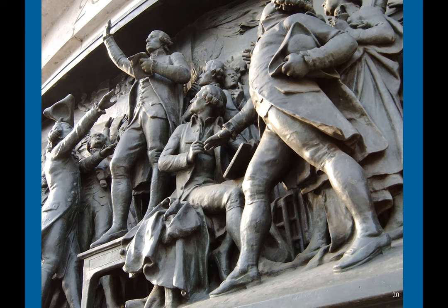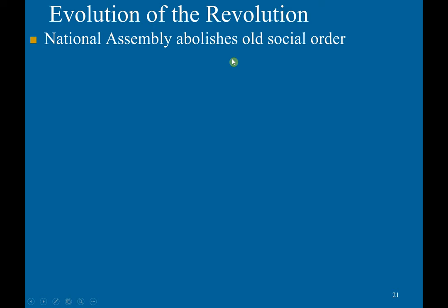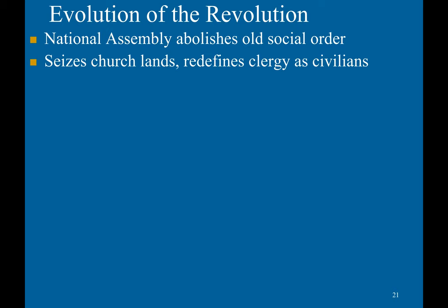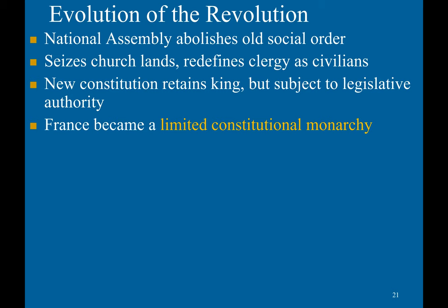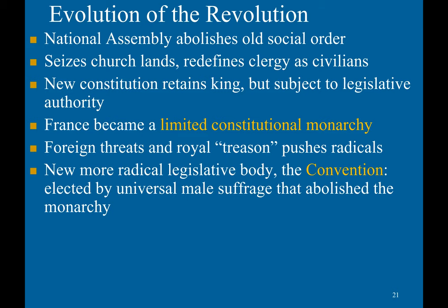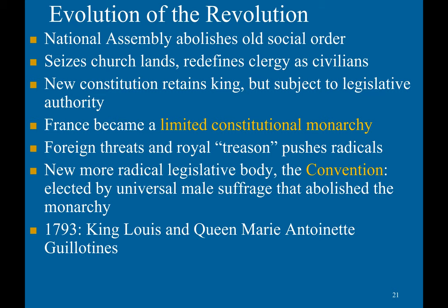This is a relief depicting the Tennis Court Oath. The National Assembly abolishes the old social order, seizing church lands and redefining clergy as citizens. The new constitution retains the king, but he is subject to legislative authority — France essentially becomes a limited constitutional monarchy. However, foreign threats and royal treason push radicals to the forefront. A new, more radical legislative body — a Convention — takes power, elected by universal male suffrage, and eventually abolishes the monarchy. In 1793, King Louis and Queen Marie Antoinette are guillotined.